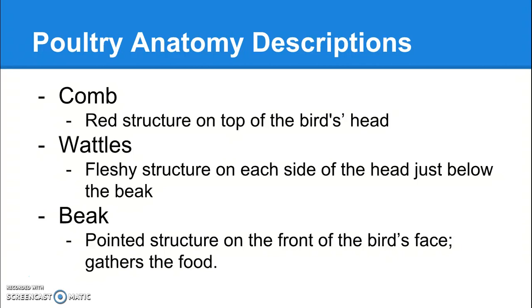Wattles are easy to remember because they look like the comb, but they're actually on each side of the head just below the beak — they kind of hang down. The beak itself is that pointy thing on the front of the bird's face, and this is where they take in food from.